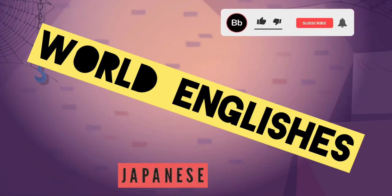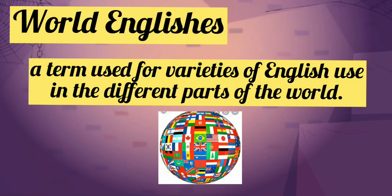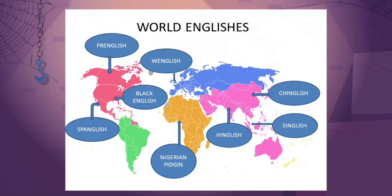You heard it right — not English but Englishes. But why? It is because World Englishes is a term used for varieties of English used in different parts of the world. Scholars of World Englishes identify the varieties of English used in different sociolinguistic contexts, analyzing their history, background, function, and influence.